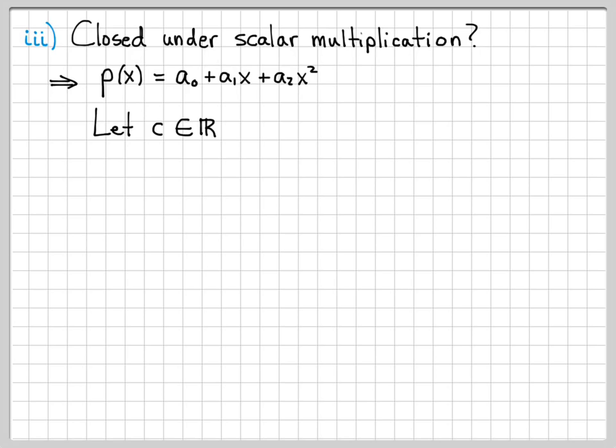Let's pick p(x) equals this, so I've chosen a very arbitrary element from the set P2. I'm going to choose a very arbitrary constant c from R. And then I'm going to compute what does c times p(x) equal? Well, if I write this out, I get ca₀+ca₁x+ca₂x², if I just multiply this out.